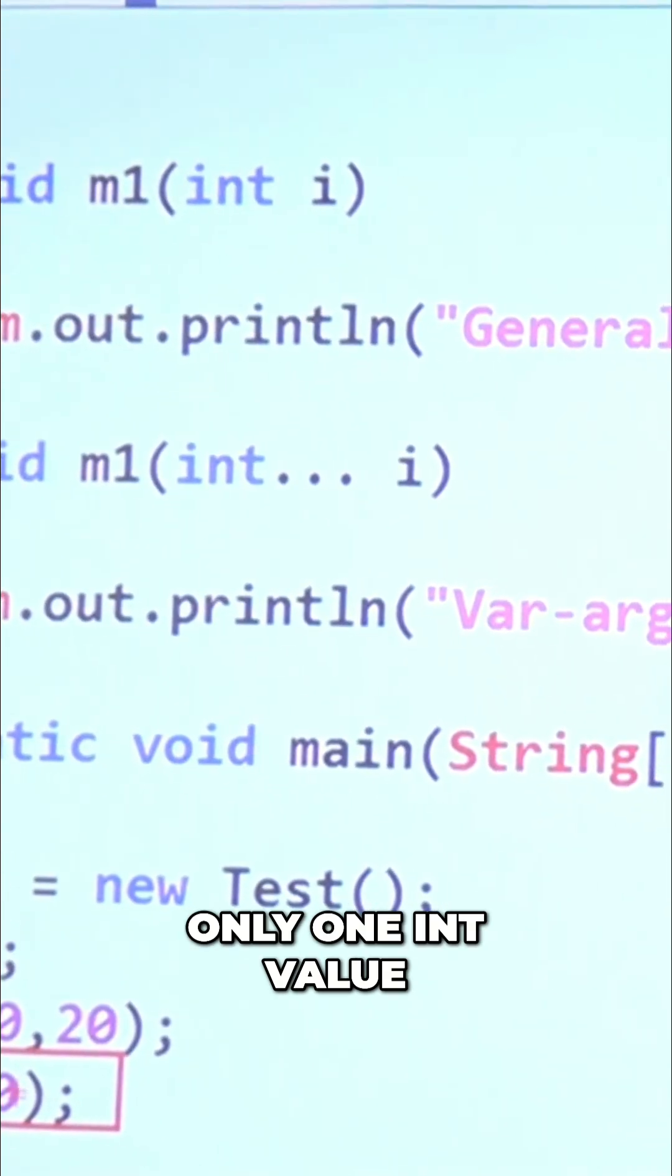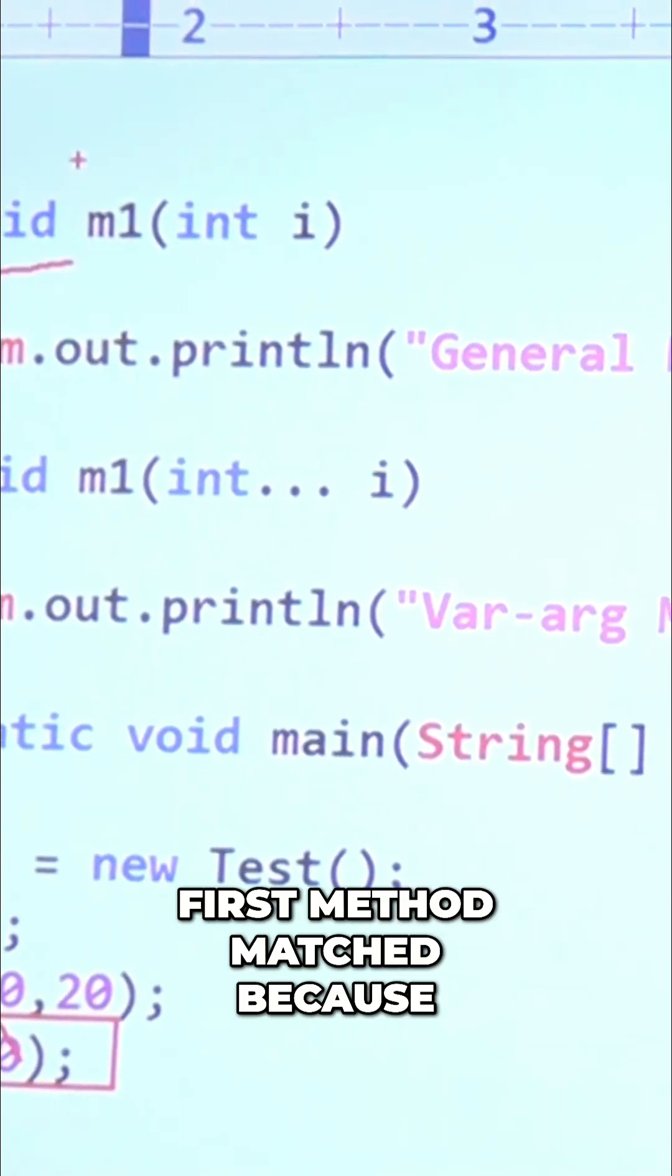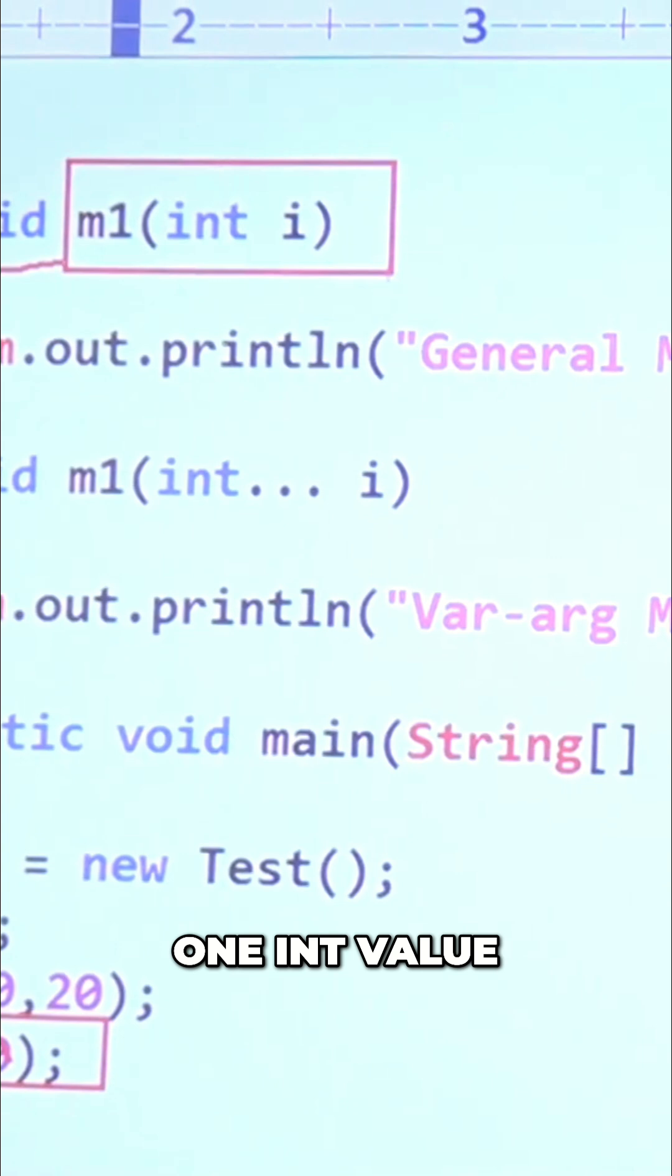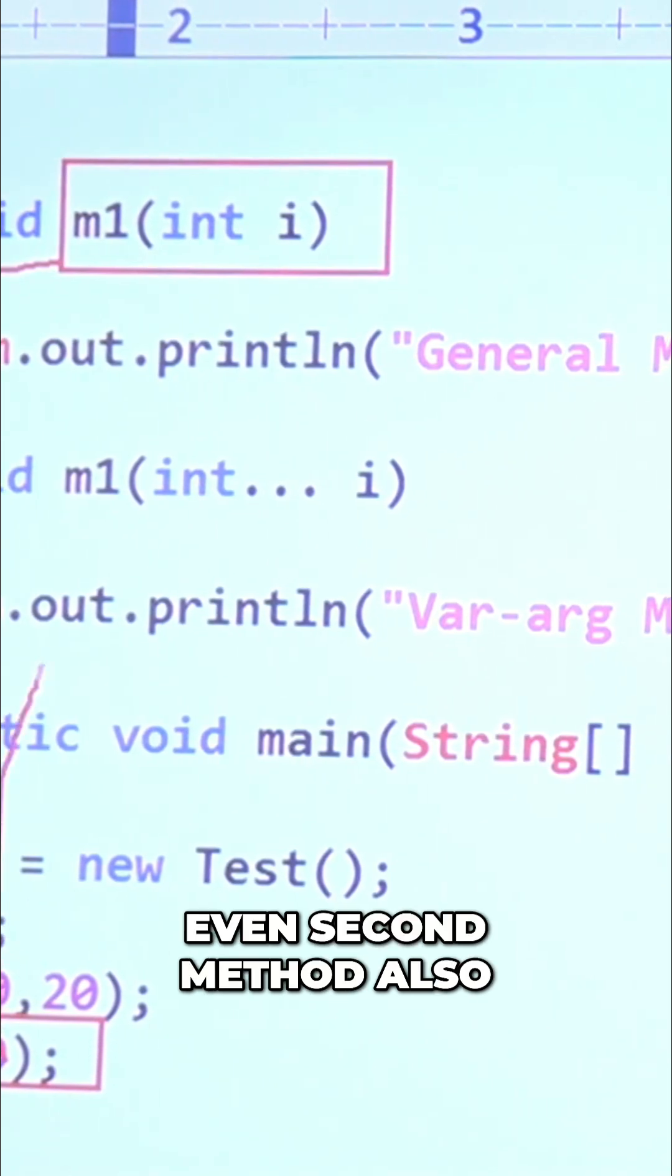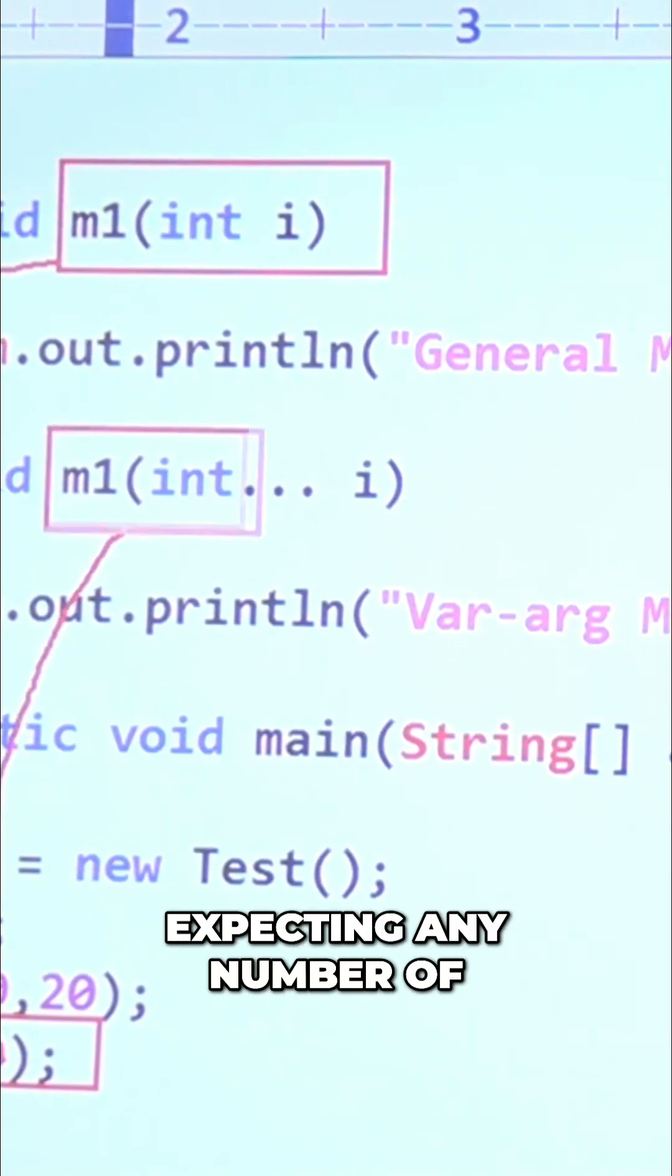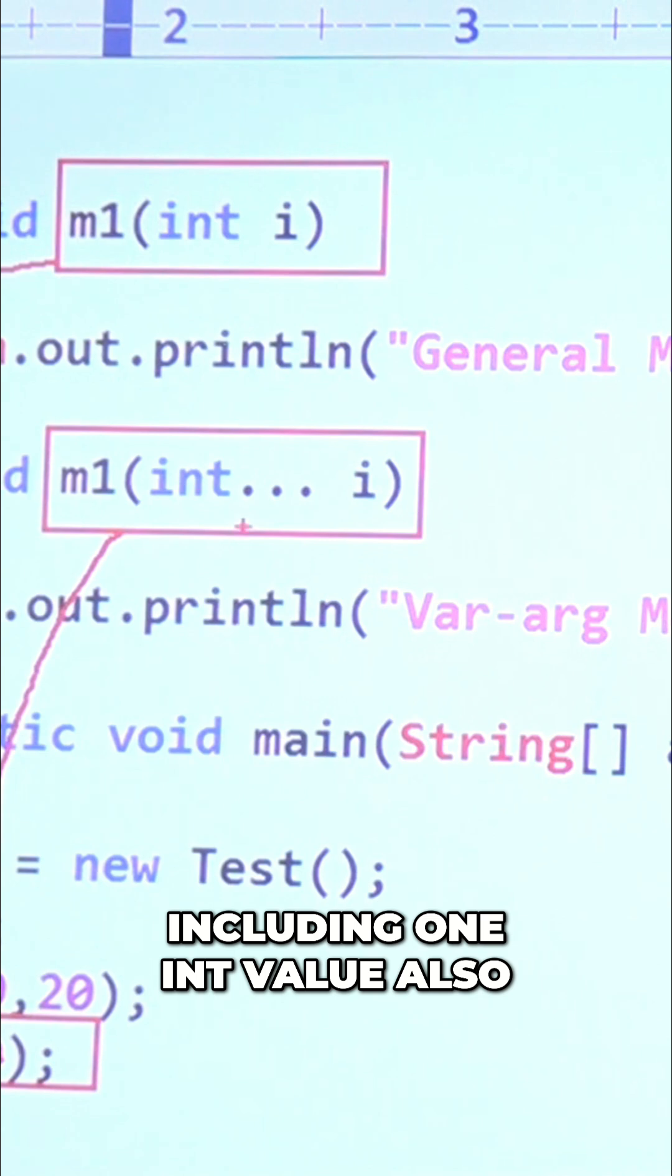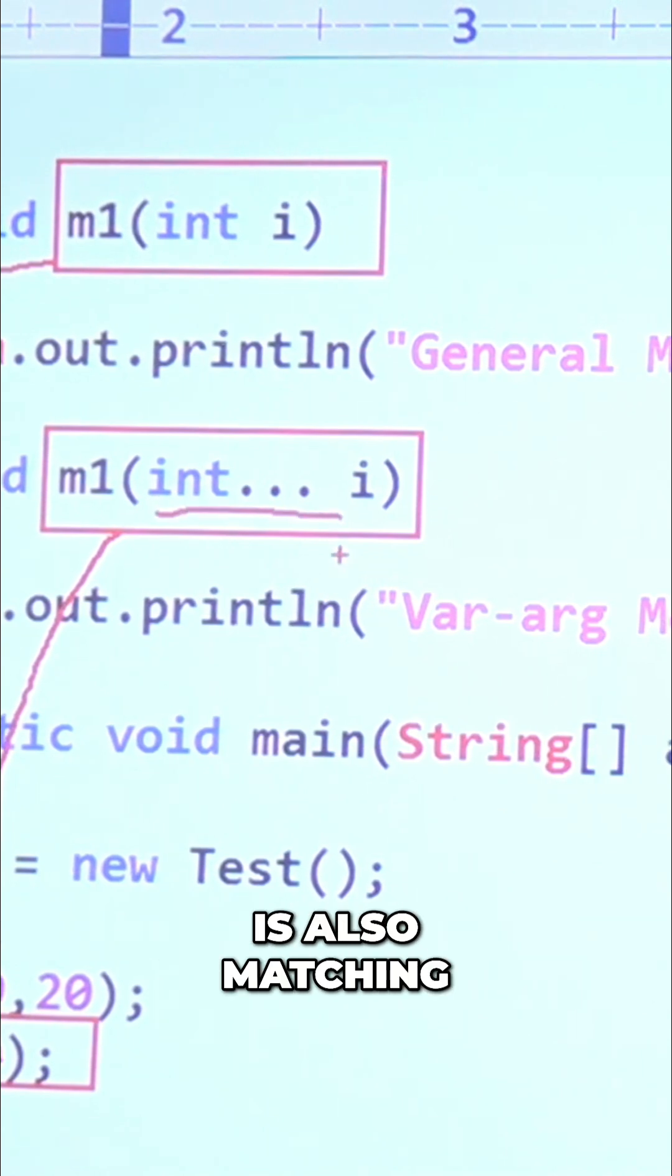First method matched because it is expecting only one int value. Even the second method also matched because it is expecting any number of int values, including one int value also. So that's why it is also matched, but...